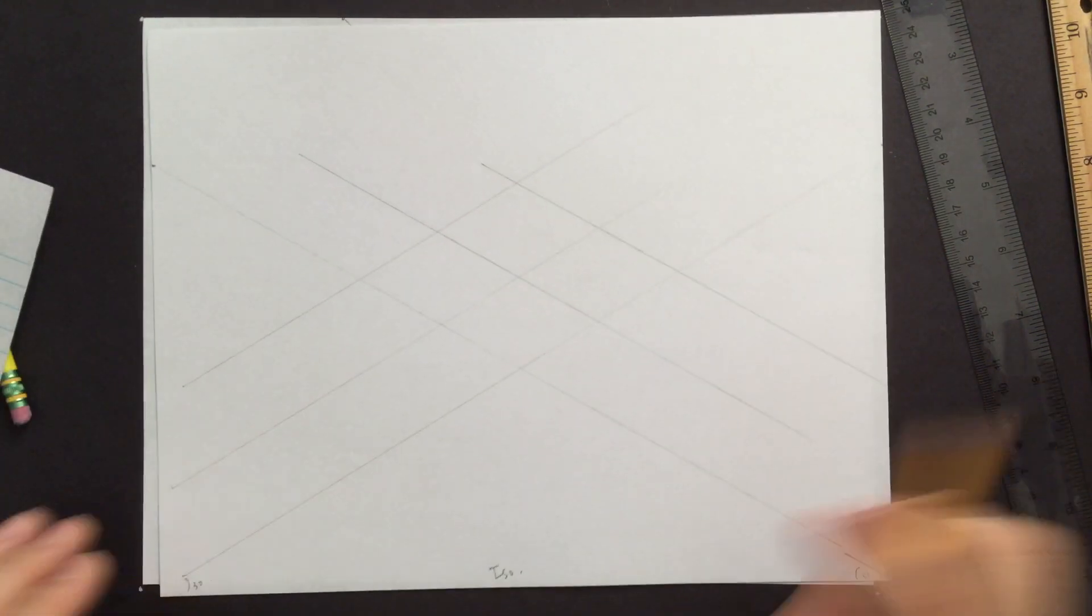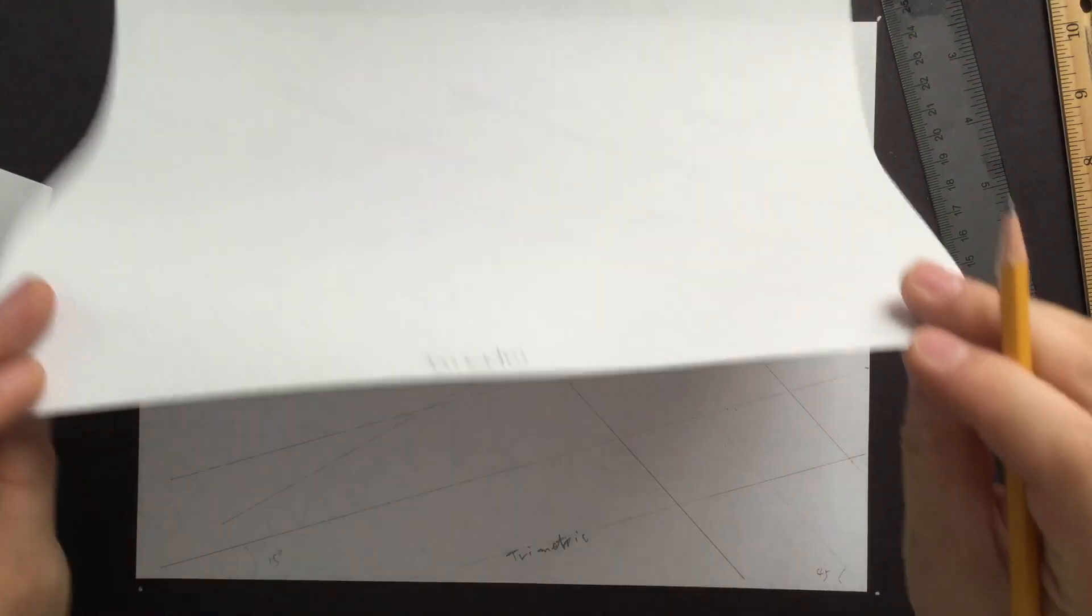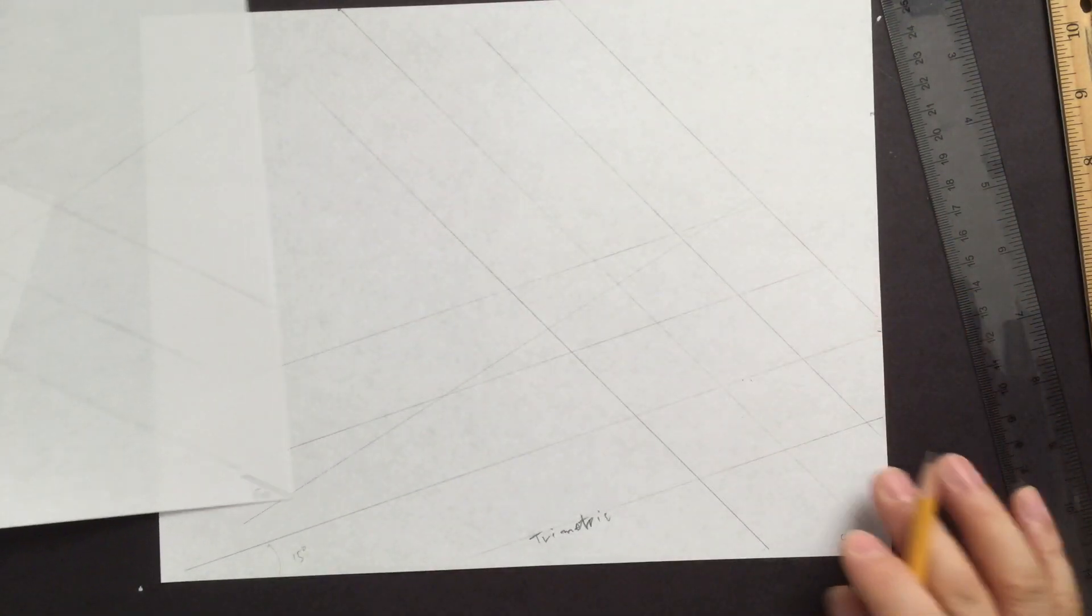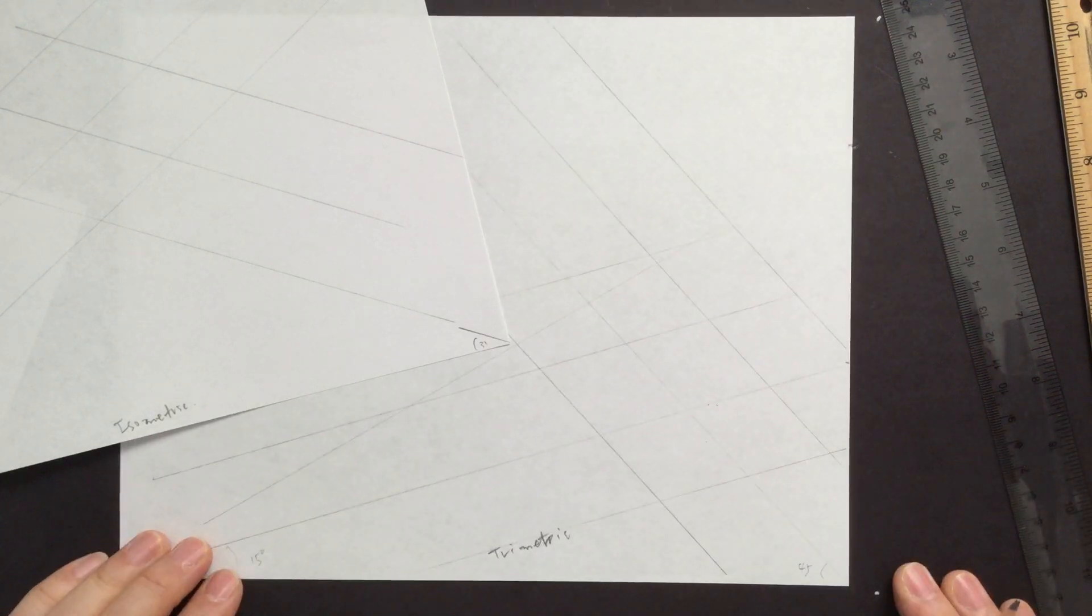And this one, again, 30 degree, 30 degree, isometric. So diametric, you just use these two. All right. Okay. All right. Thank you.